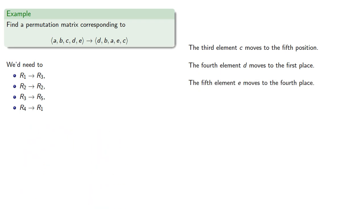And the fifth element E moves to the fourth place. The fifth row becomes the fourth row.